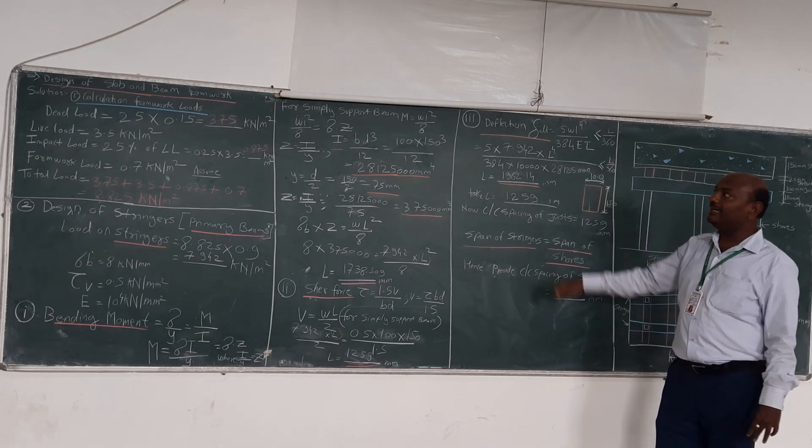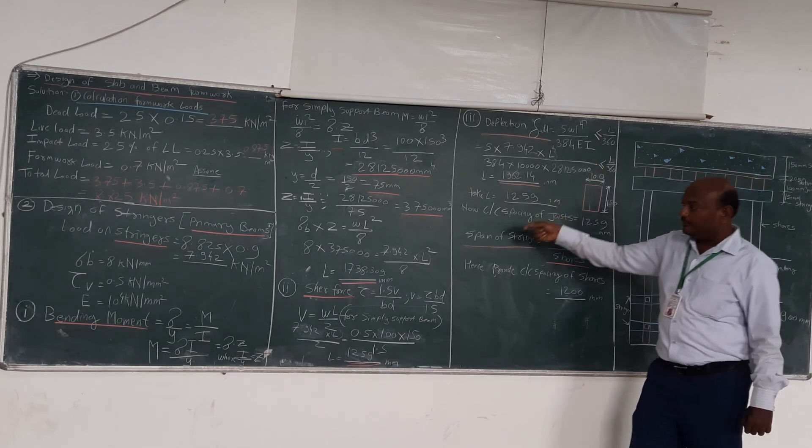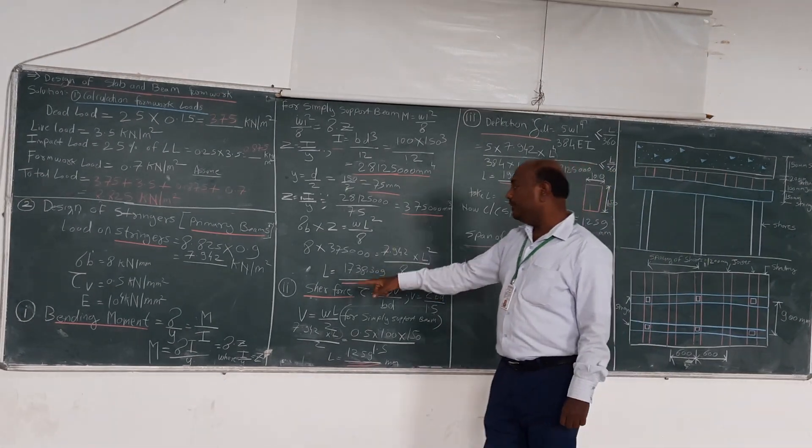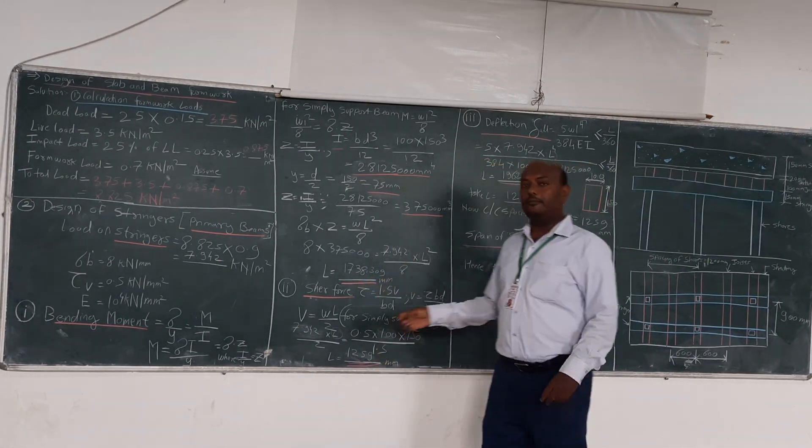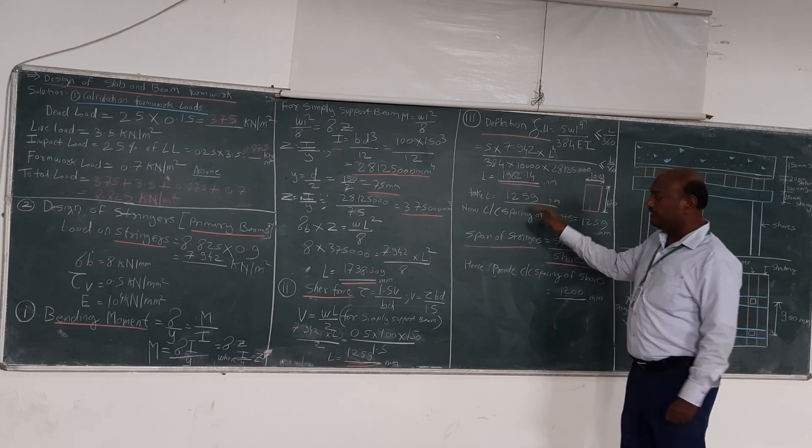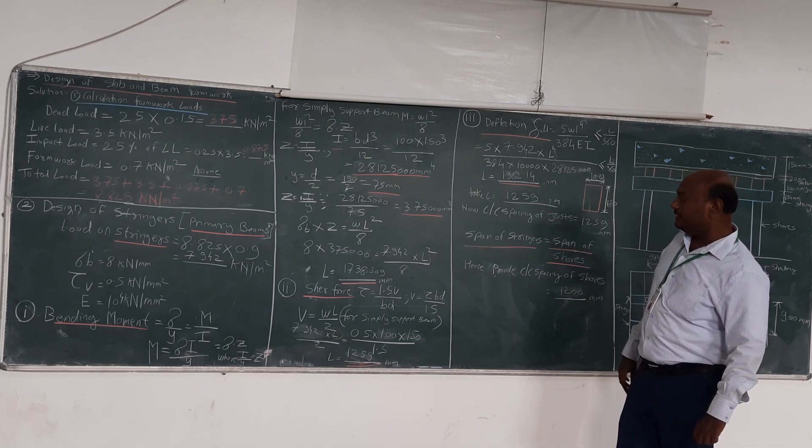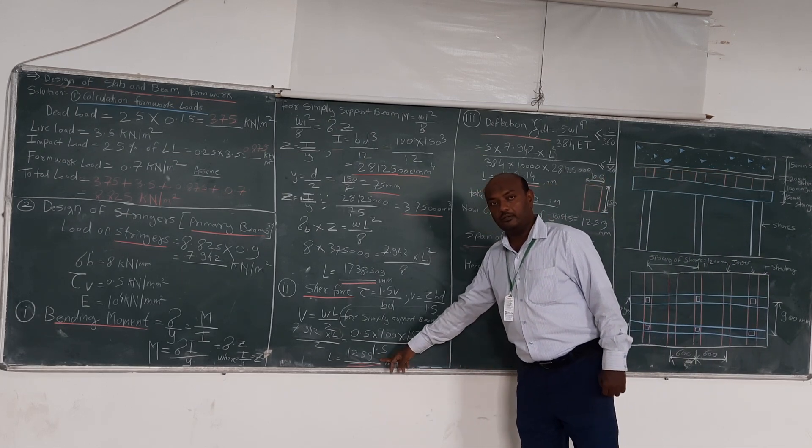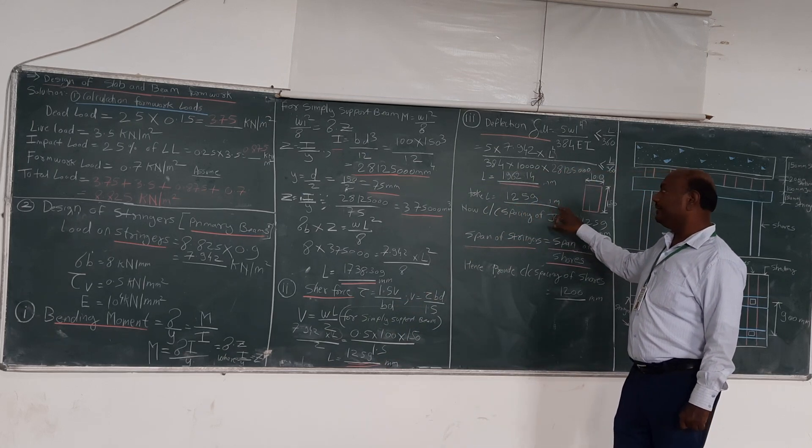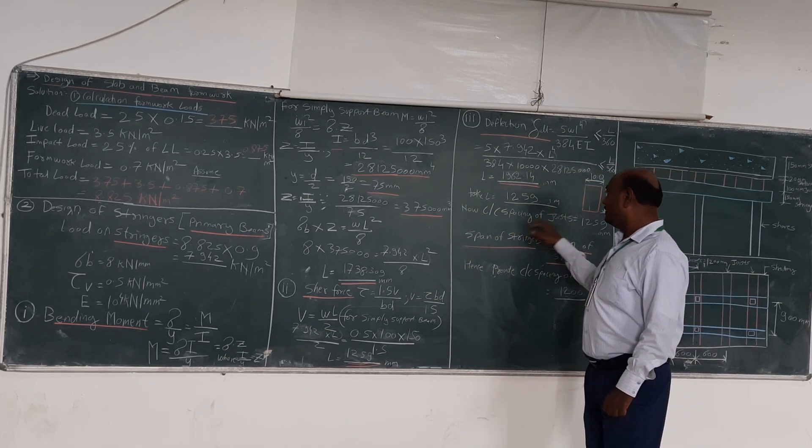Out of these three L values—by deflection formula, by shear force formula, and by moment formula—minimum L we have to choose. So here the minimum L which we have is 1859 mm. So we will take L equal to 1859 mm.